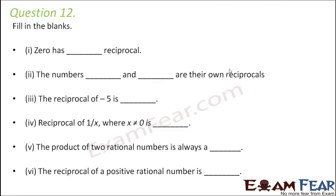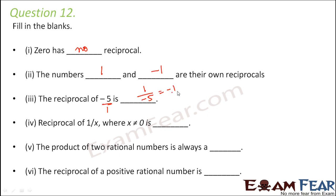Question 12: 0 has no reciprocal because its reciprocal is not defined. The numbers 1 and -1 are their own reciprocals. The reciprocal of -5 is found by reversing numerator and denominator: numerator -5 becomes the denominator, and denominator 1 becomes the numerator, giving 1/(-5), or equivalently -1/5.